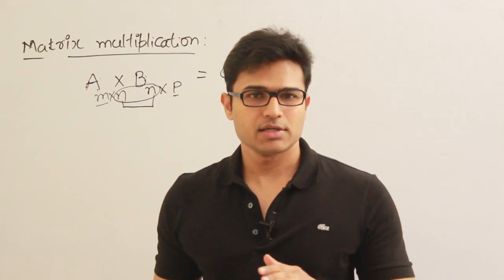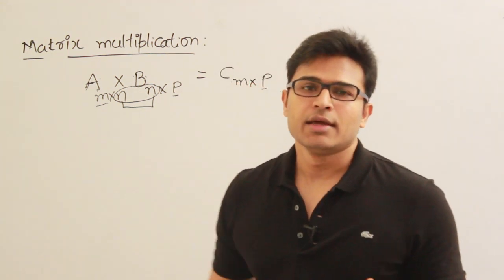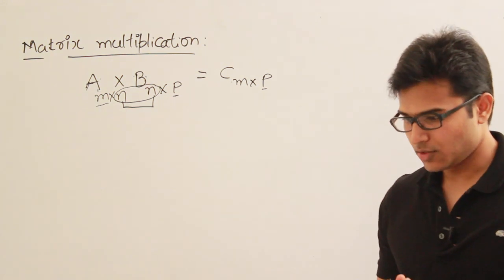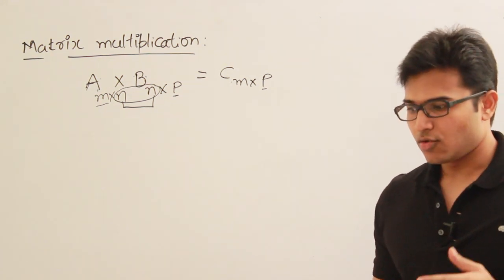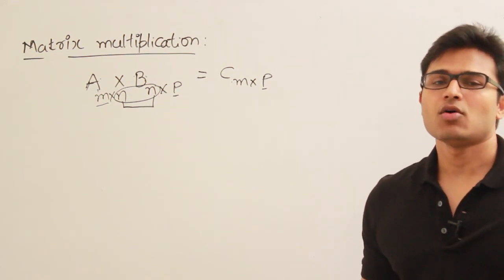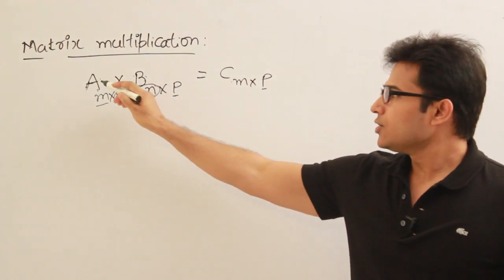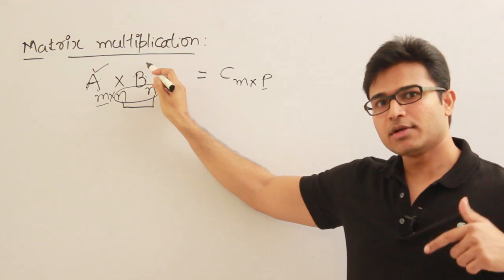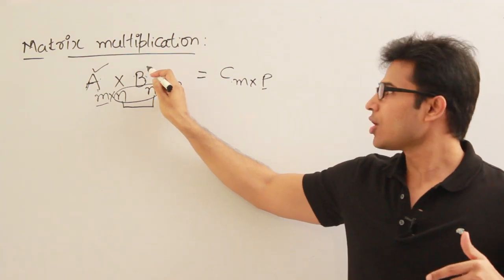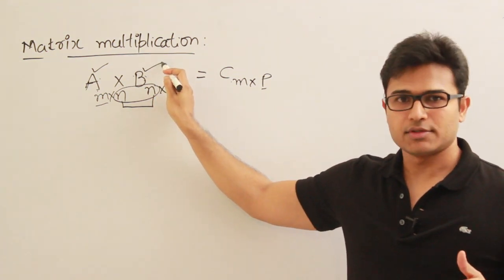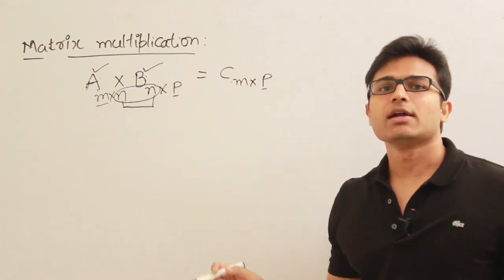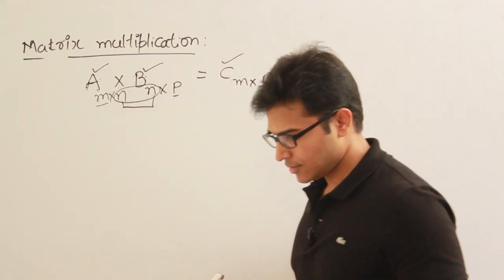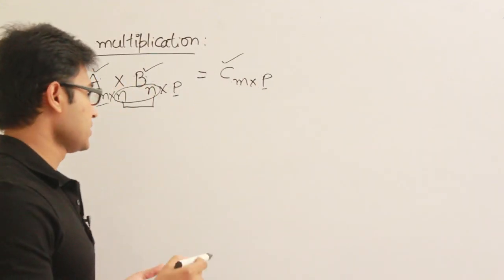You must already know about this, but just for the sake of revision I am doing it. Multiplication is done by the row-by-column rule. This means we take a row from the first matrix and multiply it with the corresponding elements of a column from the second matrix, then sum them up to get an element in the resulting matrix.